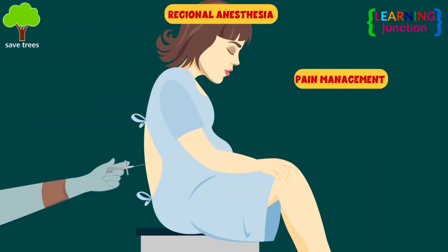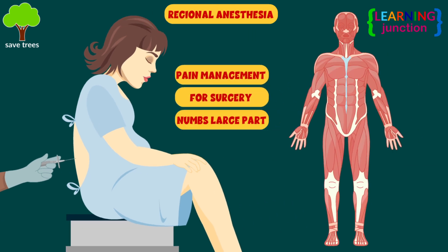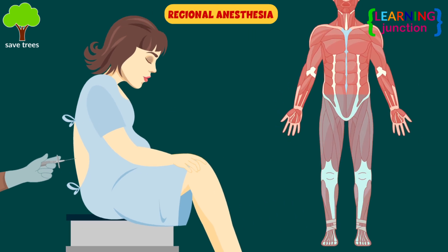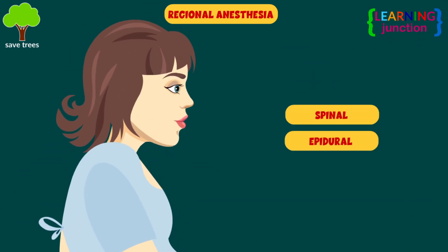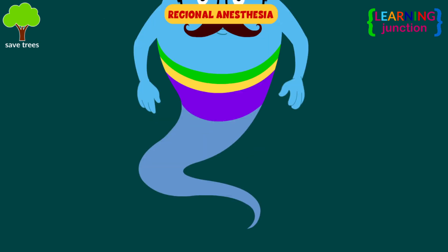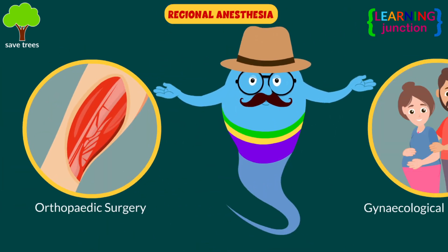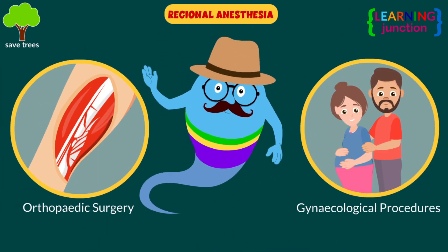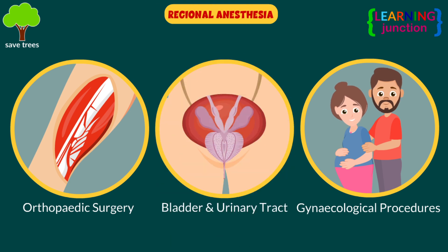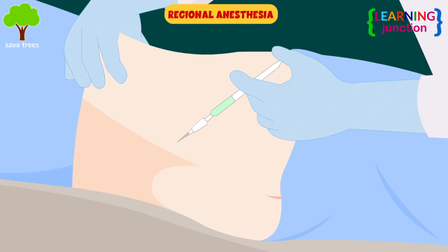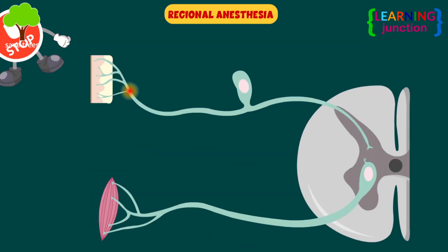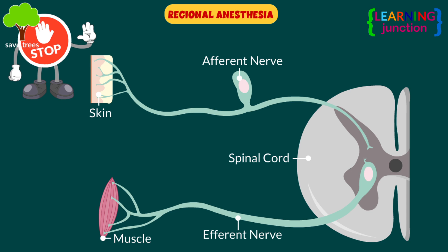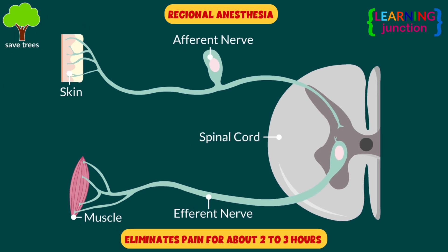Regional anesthesia is a type of pain management for surgery that numbs a large part of the body, such as from the waist down. Spinal and epidural anesthesia are examples of regional anesthesia. It's often used for orthopedic surgery, gynecological procedures, and for operations on the bladder and urinary tract. The doctor injects spinal anesthetic into the fluid around your spinal cord. It blocks the transmission of afferent nerve signals from peripheral nociceptors, which eliminates pain for about two to three hours.